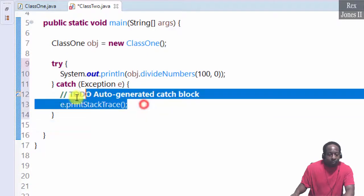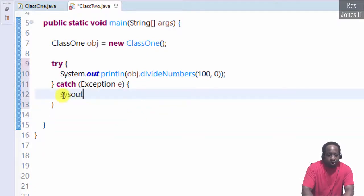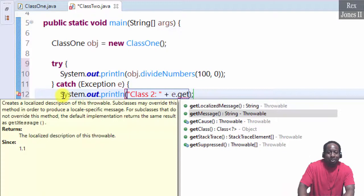Print the message with System.out. Class 2, I almost misspelled class didn't I? Dot getMessage.